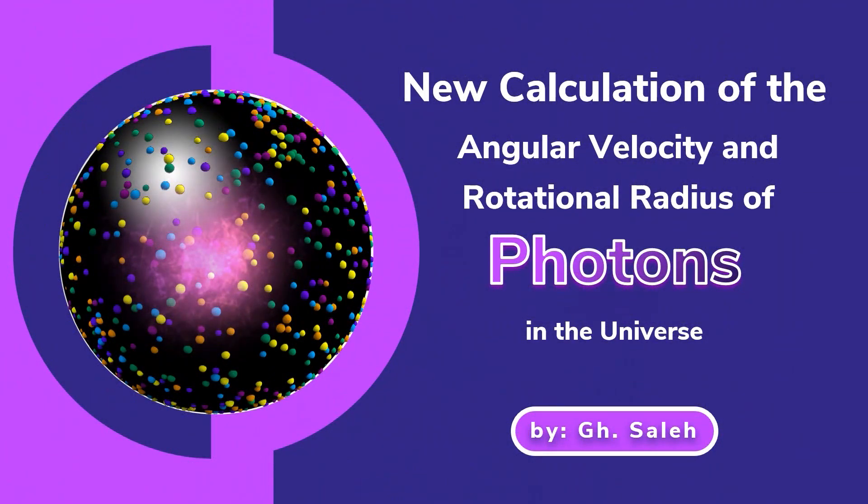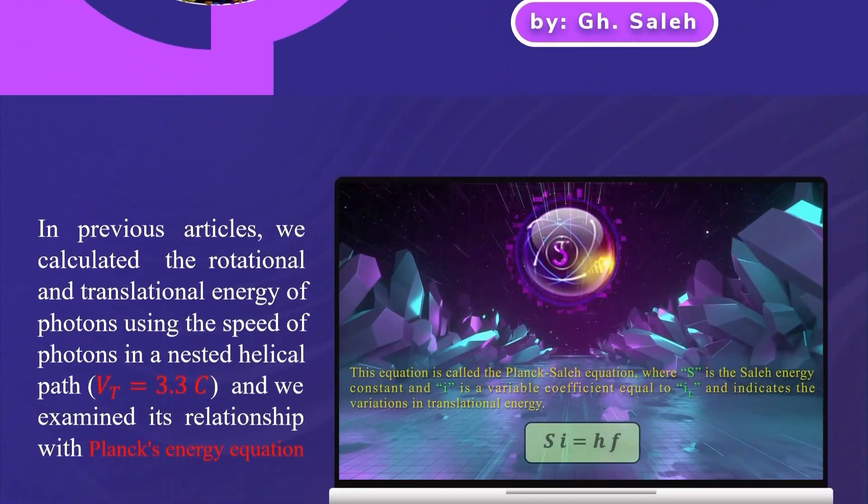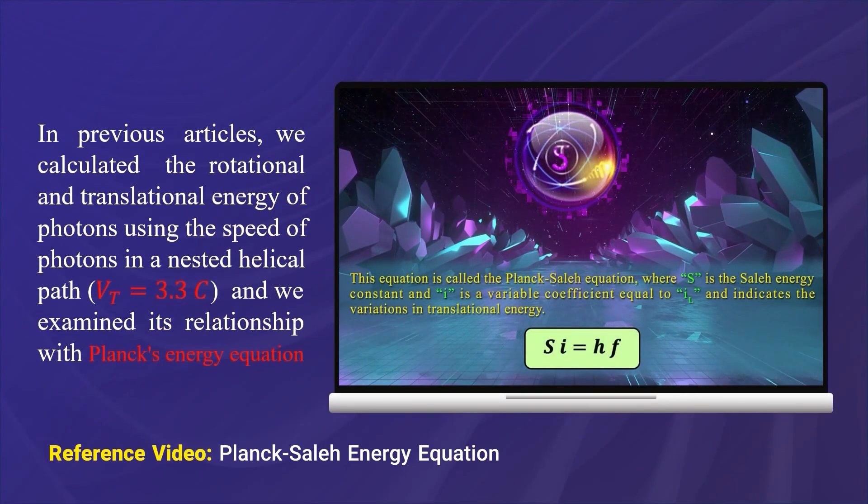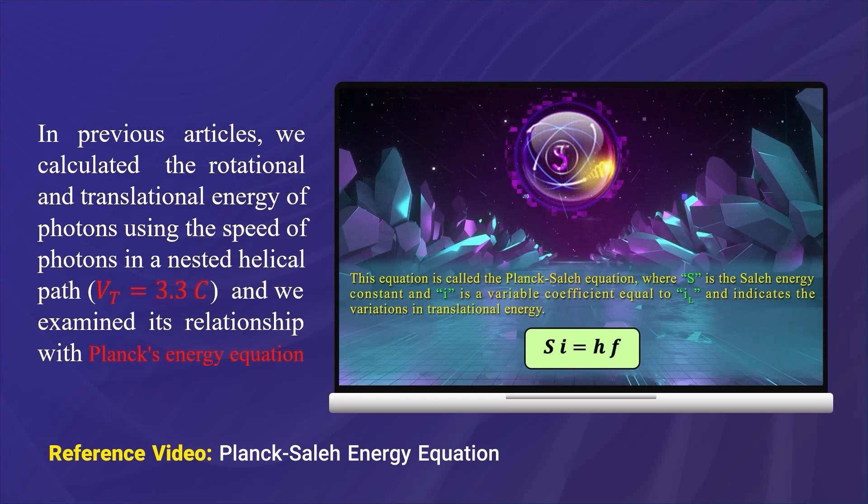New Calculation of the Angular Velocity and Rotational Radius of Photons in the Universe. In previous articles, we calculated the rotational and translational energy of photons using the speed of photons in a nested helical path and we examined its relationship with Planck's energy equation.